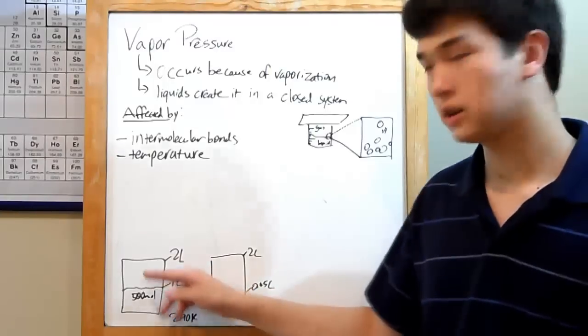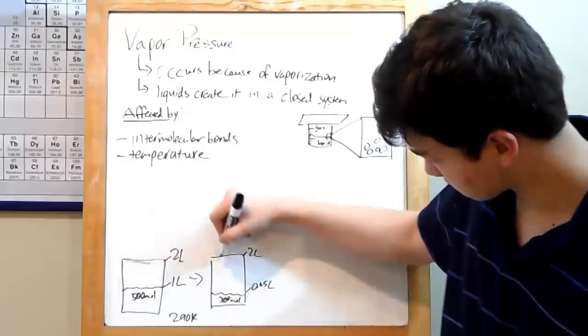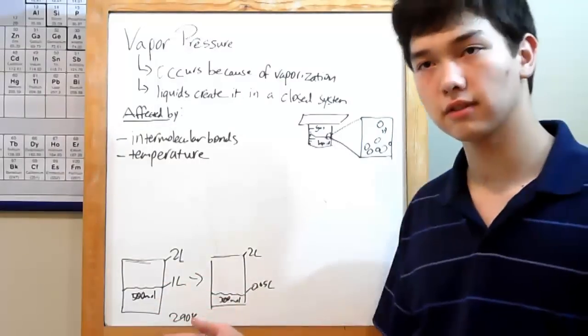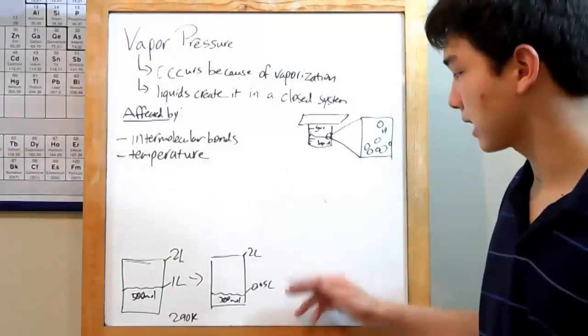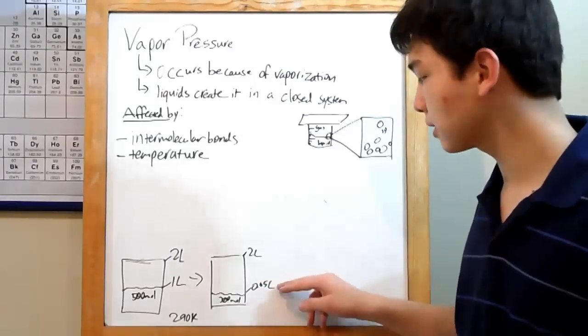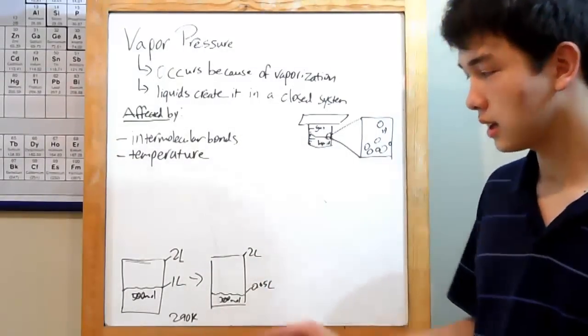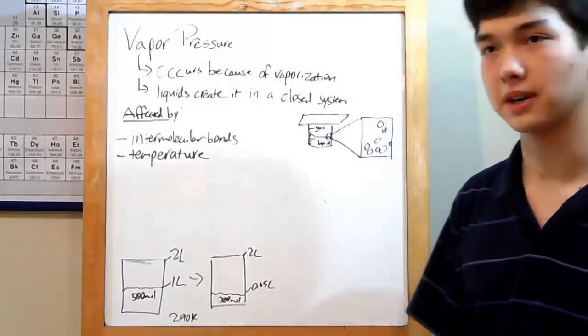Let's say you have a 2-liter container, and it's closed, so no gases can escape. It's filled with 1 liter of water, which is about 500 moles. After letting it sit for a while, you come back to the same 2-liter container to find that you only have 0.65 liters of water and 300 moles. Given that the entire system was kept at 290 kelvins the whole time, what is your vapor pressure?